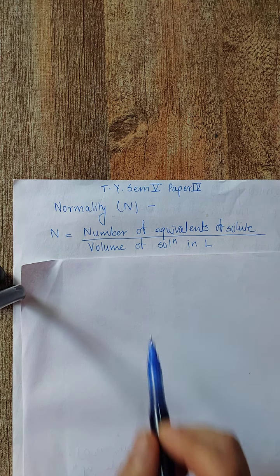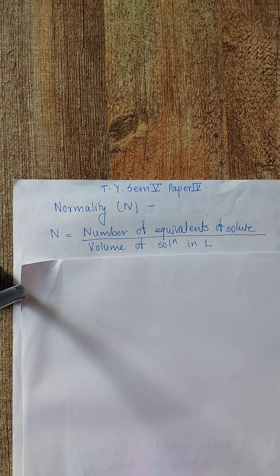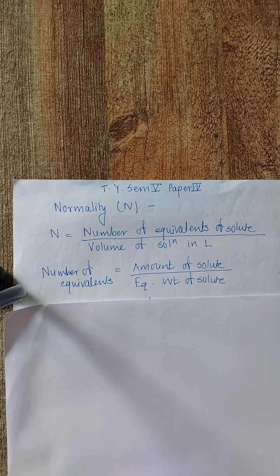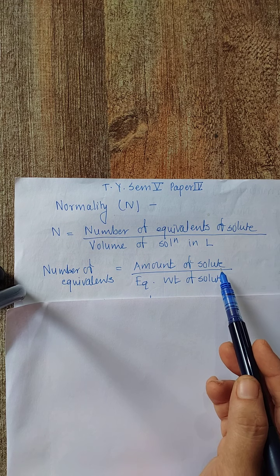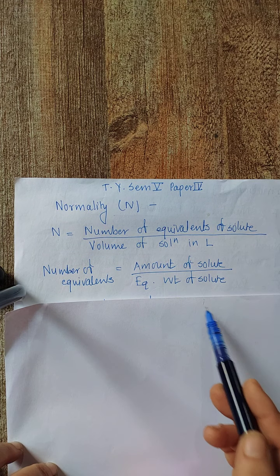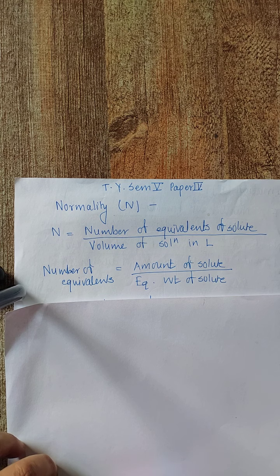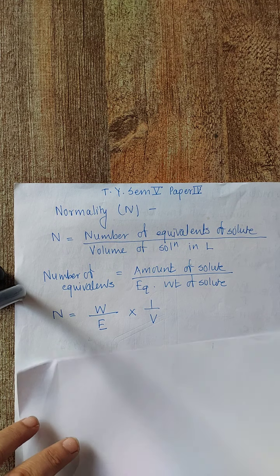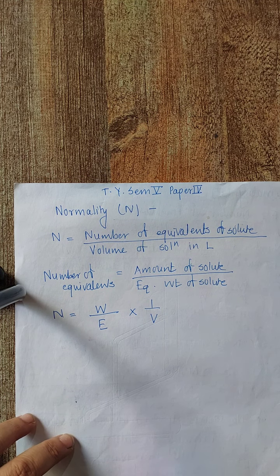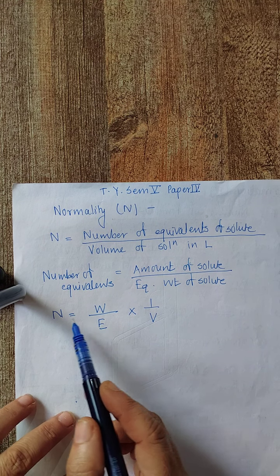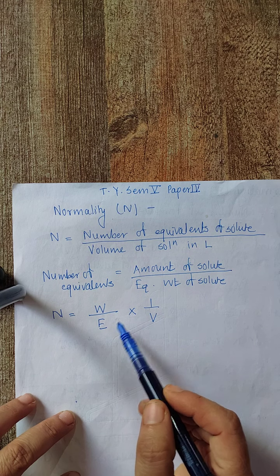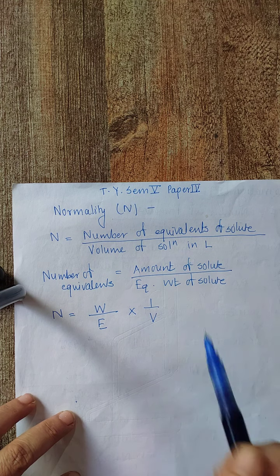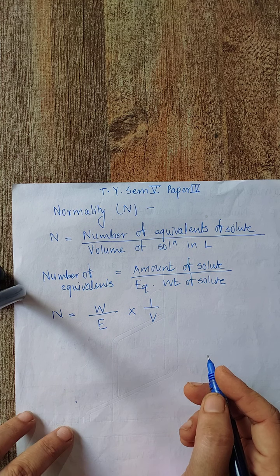Now, what is exactly meant by the number of equivalents? Number of equivalents is nothing but the amount in grams of solute divided by the equivalent weight of solute. Hence we can write that normality N equals W divided by equivalent weight, multiplied by 1 over V. This is the formula for normality.